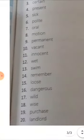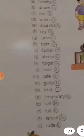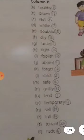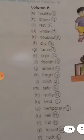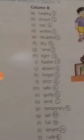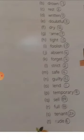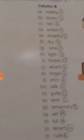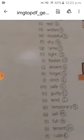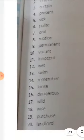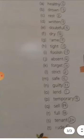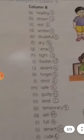Thirteenth, swim - drown. Fourteenth, remember - what will happen? Forget. It is forget. Fifteenth, loose - tight. Where is tight? There it is. Sixteenth, dangerous - what is it? Safe.